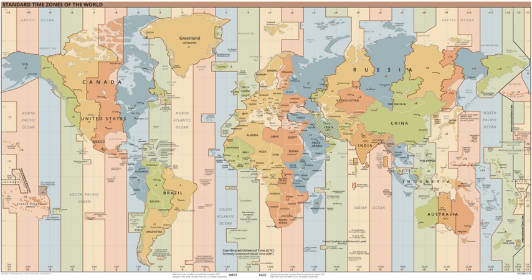The first leap second occurred on 30 June 1972. Since then, leap seconds have occurred on average about once every 19 months, always on 30 June or 31 December. As of January 2017, there have been 27 leap seconds in total, all positive, putting UTC 37 seconds behind TAI.